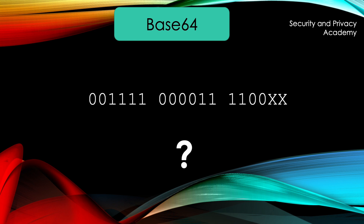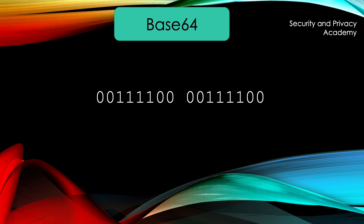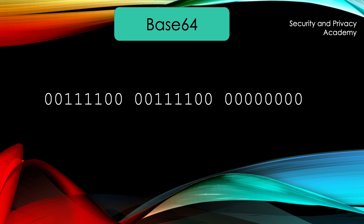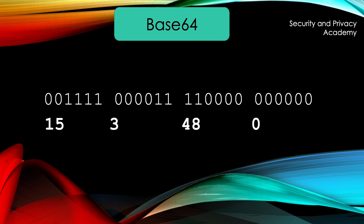So going back to our example, we know that we need to add 1 padding byte to the original 2 bytes. Transferring them to 6-bit words shows that the last word is all 0s, which doesn't convert to the decimal value of 0, but rather gets marked as a padding byte. Therefore, the mapping converts the padding byte to an equal sign.